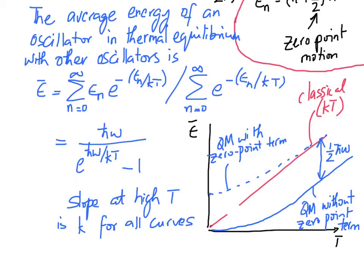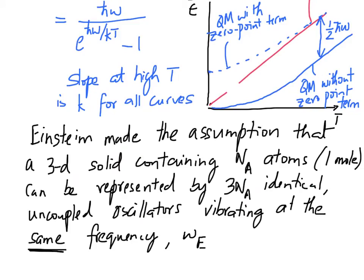So the discussion so far deals primarily with 1D oscillators. Einstein next made the assumption that a 3D solid containing one mole of atoms can be represented by 3 N_A identical uncoupled springs, all of them vibrating at the same frequency omega, omega e. So these are key assumptions. Einstein makes the giant leap that the solid is composed of a bunch of atoms and they are all connected to each other through springs, and these springs are quantum mechanical in nature. In other words, they obey the laws of quantum mechanics, their energy cannot take on any value, they are quantized.